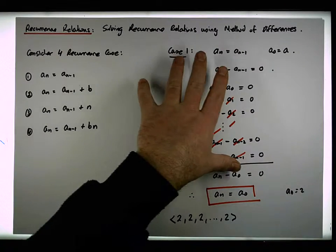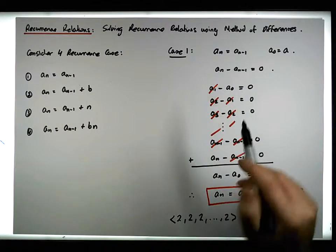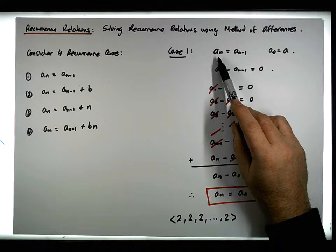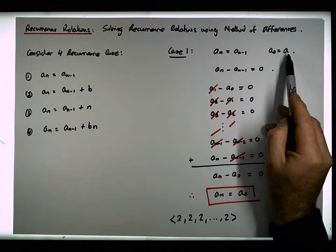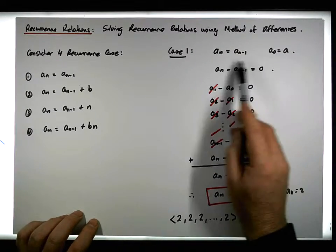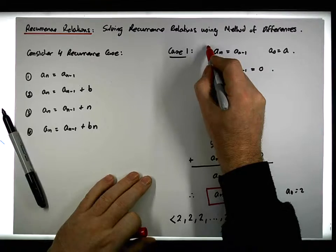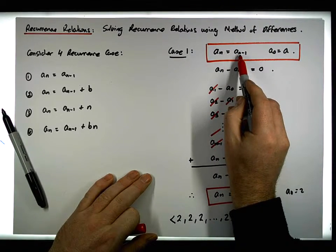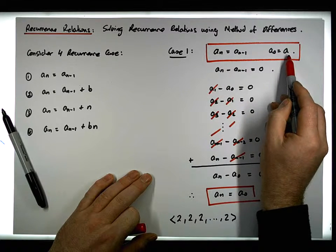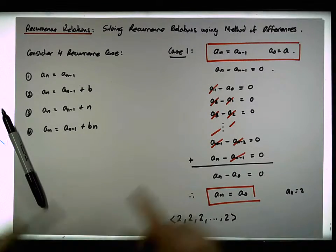This is a very simple base case — Case 1 that we're considering here — where the nth term is defined in terms of the previous term and the base case is simply a constant. The closed form solution in this particular situation is that a_n is simply equal to whatever the base case was. So that's our first case.